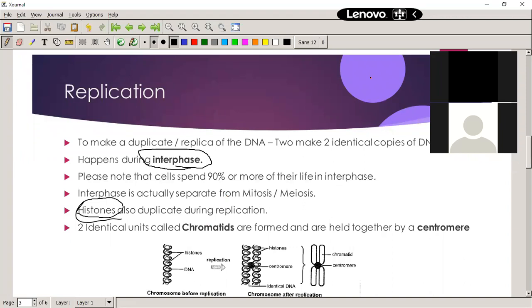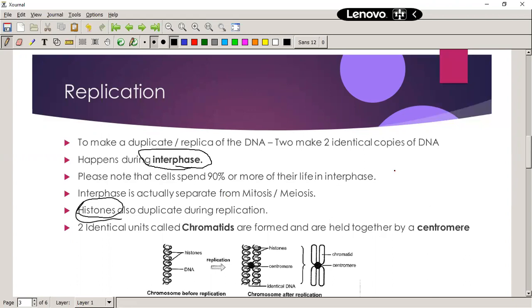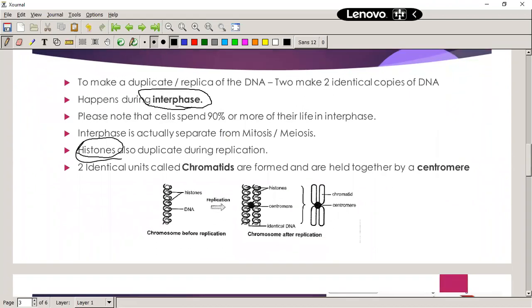We can have that around the DNA, around the histones again to keep it organized. Then, when we go through replication, what in the end I want to have two identical units of chromatids. There's a chromatid and there's a chromatid, and they're going to be identical to one another.